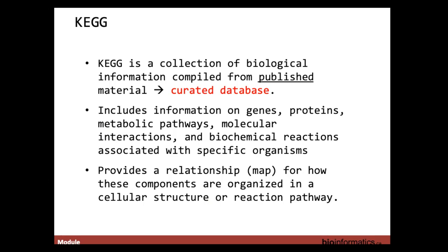How can you manually curate hundreds of pathways across hundreds of species? You can't. You fix on a handful of key organisms — bacteria, human, key model organisms — which you manually curate. Then you use orthology prediction: proteins and genes are conserved across species, so you take your human pathways and project that information based on orthology data into another species to create a predicted collection of pathways.